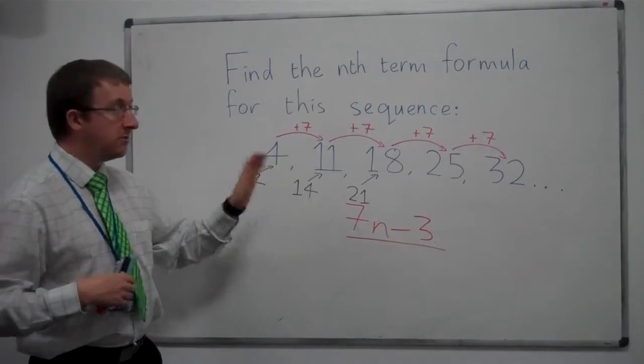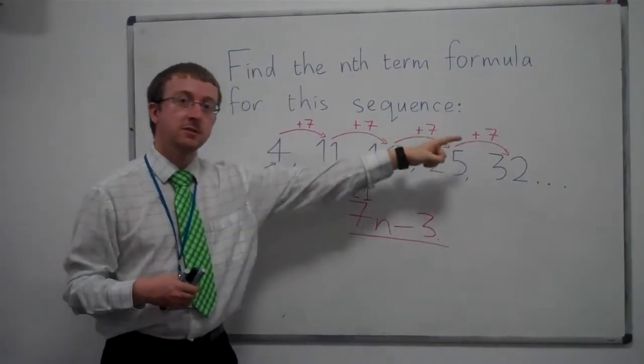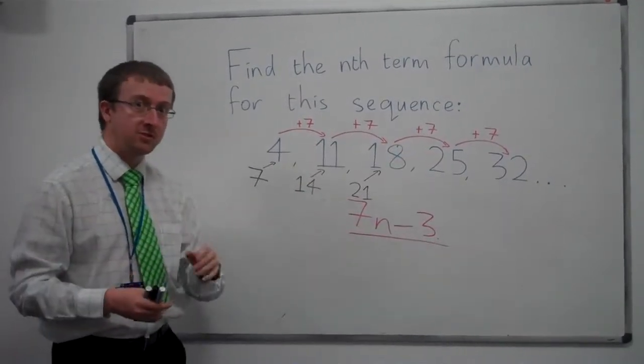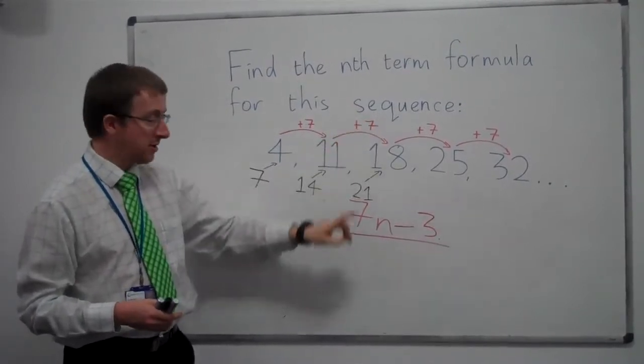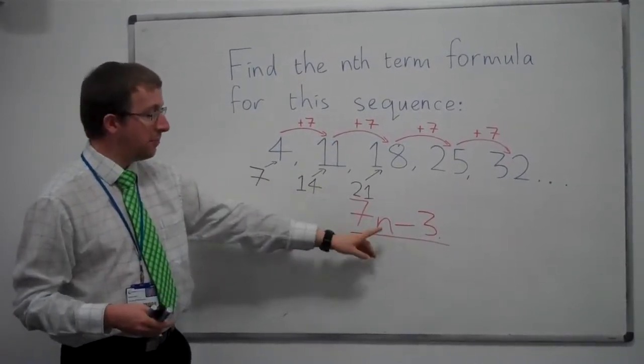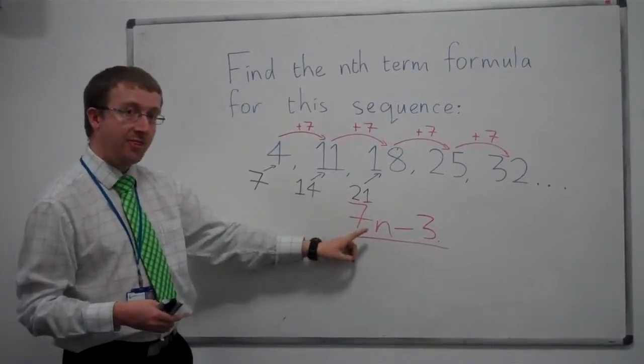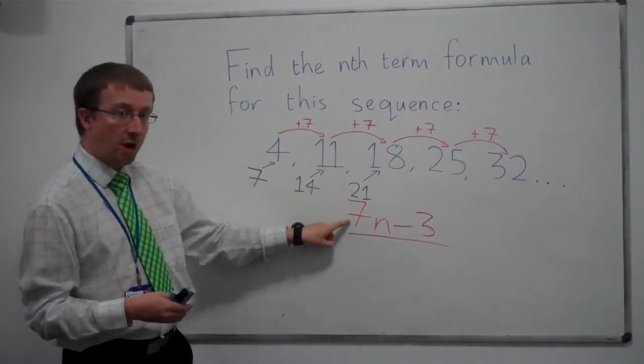So, what you need to do to find the nth term formula for a sequence: Find out what you're adding on each time. Check that it's the same number every time, otherwise you have to do something different. That value, whatever it was, write it down and put a letter n after it. And then, all you need to do after that is check one thing.